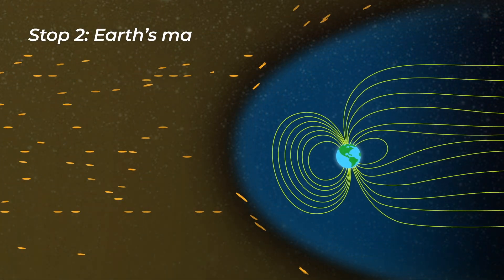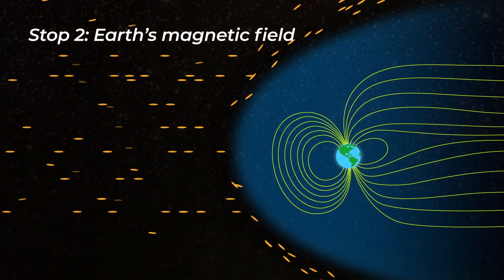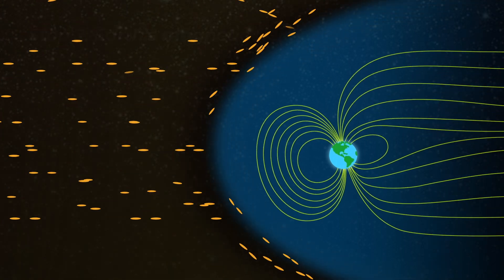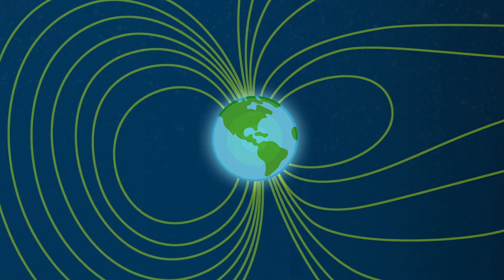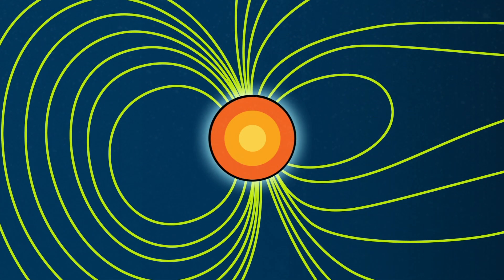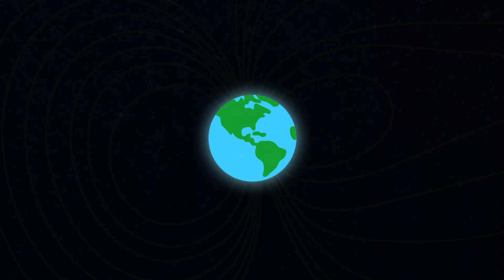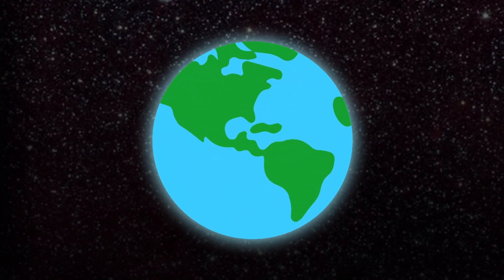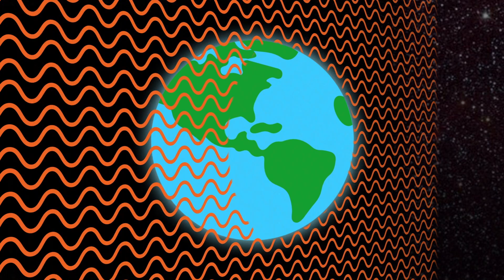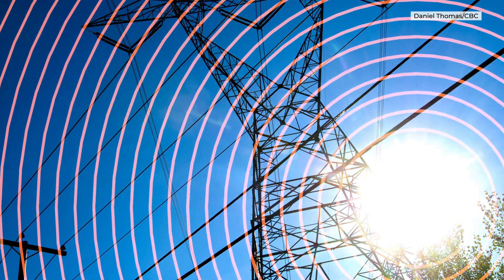Most of the solar wind is deflected by the Earth's magnetic field. This is basically a force field that's generated by the movement of molten metals in the Earth's core. Without this force field, the blast of the solar wind would damage living things and technological systems, like our electrical grid.